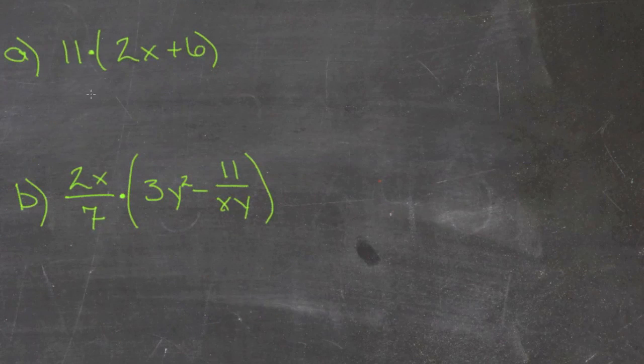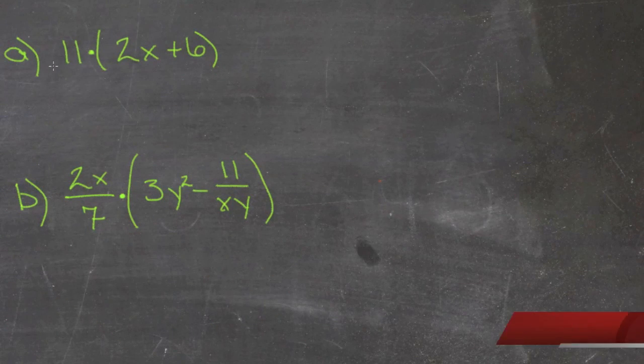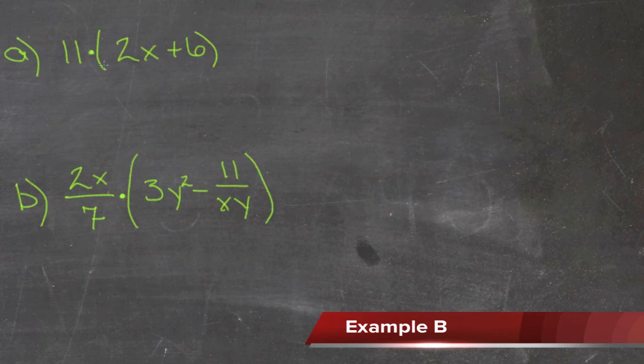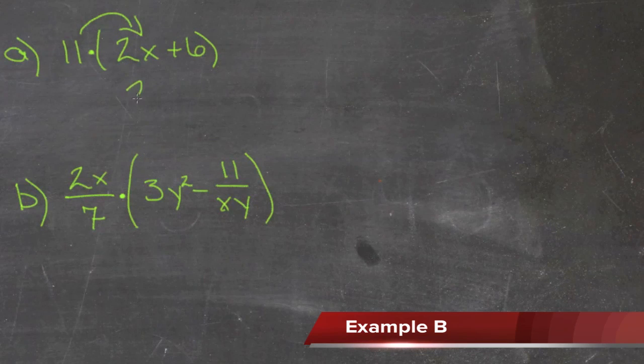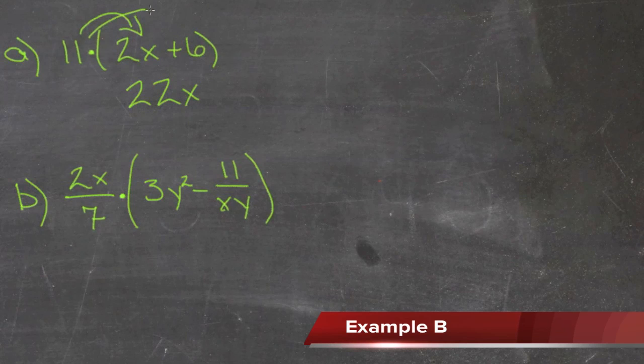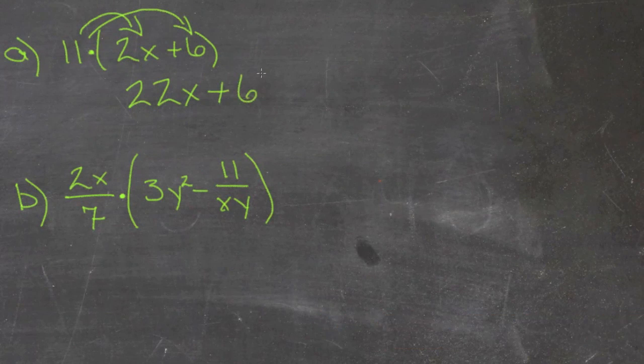We're going to do some more practice with the distributive property. We have two different problems here. We'll start with the top one: 11 times the quantity 2x plus 6. We're going to distribute the 11 to each of the terms inside the parentheses. So we have 11 times 2x, which gives us 22x, and then 11 times positive 6, which gives us positive 66.